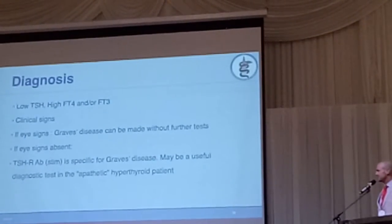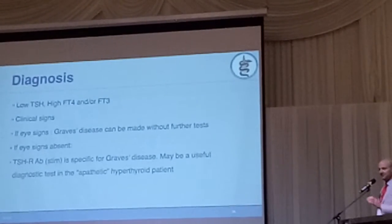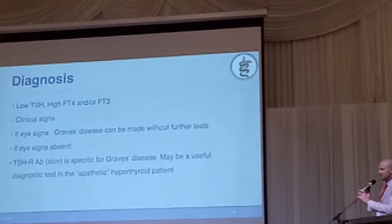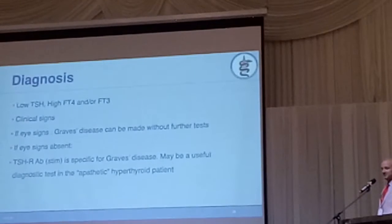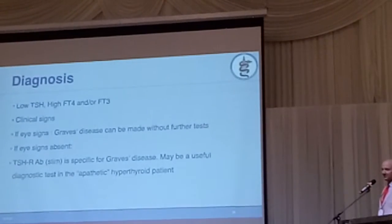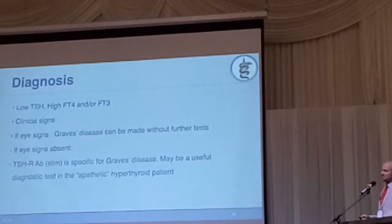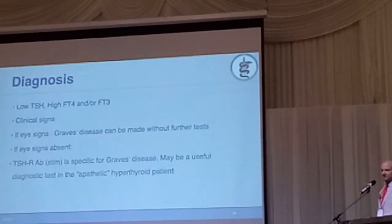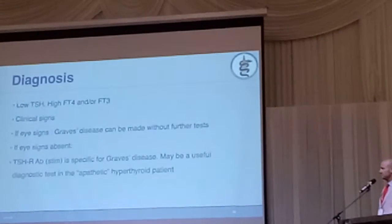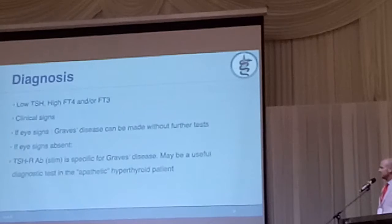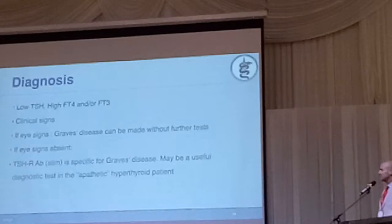How do you diagnose Graves' disease? You need to measure TSH — it will be very suppressed. Your T4 is high and your T3 is high. You have the clinical signs I talked about. If you have the eye signs, that alone can help you diagnose. If you still doubt, it's possible to detect the antibodies in the serum to confirm the diagnosis of Graves'.